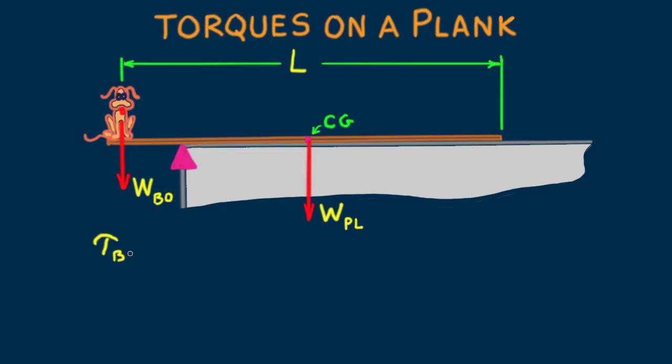Here the Greek letter tau stands for torque. We see that Bo is at a distance x to the left of the fulcrum. The center of gravity of the plank is at its midpoint, distance L over 2 from the left edge of the plank, which means that it's at a distance L over 2 minus x from the fulcrum.